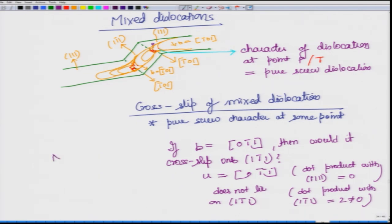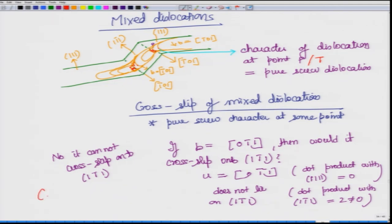The answer is no — it cannot cross slip onto (1̄11). But the follow-up question is: can it cross slip at all? The first instinct should be: why should this dislocation with Burgers vector [01̄1] be any different from the one with [1̄01], which could cross slip? There is nothing special about [1̄01], so yes, it should be able to cross slip — but onto what plane?